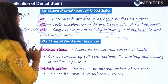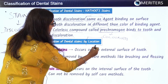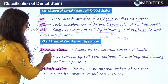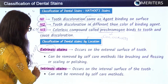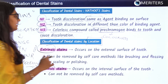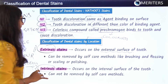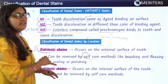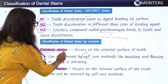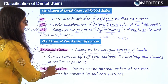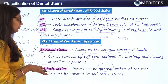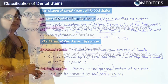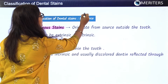Another classification of dental stains is based on the location where it occurs. There are two types: number one, extrinsic stains, and number two, intrinsic stains. Extrinsic stains occur on the external surface of the tooth and can be removed by self-care methods such as brushing and flossing. Intrinsic stains are internal in nature, present inside the tooth, and cannot be removed by self-care methods.